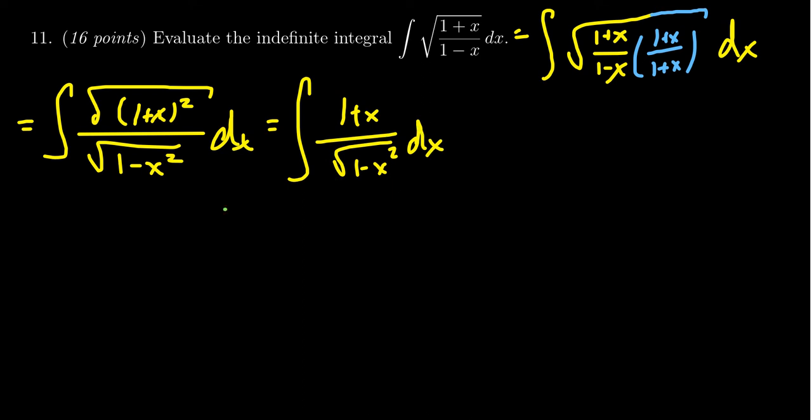Looking at the square root, we have the square root of 1 minus x squared. That indicates to me that x should equal sine of theta. Therefore, dx is equal to cosine of theta d theta, and the square root of 1 minus x squared is equal to cosine theta.